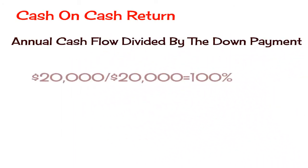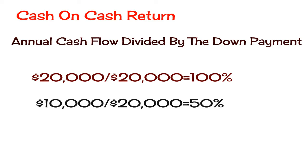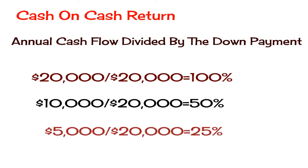Another important factor is cash on cash return. This is the annual cash flow divided by the down payment. For example, if the property has a cash flow of $20,000 a year and the down payment to purchase the property is $20,000, then it takes one year to recapture the down payment and the cash on cash return is 100%. If the cash flow is $10,000, it will take two years and the cash on cash return is 50%. If it takes four years, it will be 25%, and so on.